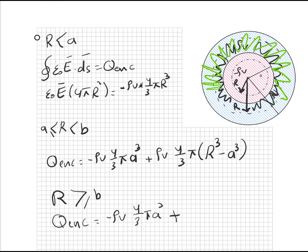هاي المنطقة كلها مشمولة بالحساب. شحنة هاي المنطقة هي رو في، بس الحجم مالتها رح يكون أربع على ثلاثة باي، تفتح قوس، B تكعيب ماينس A تكعيب. ليش؟ لأن هاي المنطقة هي الكرة الكبيرة اللي نصف قطرها B ناقص حجم الكرة الصغيرة اللي نصف قطرها A. تعوضها بقانون قاوس وتبسط وتطلع الإلكتريك فيلد.